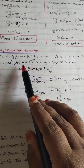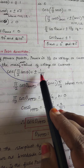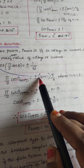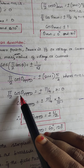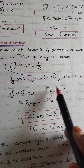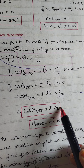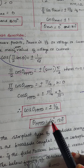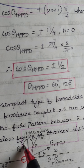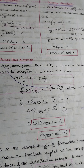For the half power point, the power is equal to half when E equals plus or minus 1 by root 2. Setting cos of pi by 2 cos theta equal to plus or minus 1 by root 2, we get pi by 2 cos theta equal to plus or minus pi by 4. Substituting n equal to 0, cos theta equals plus or minus 1 by 2, giving theta equal to cos inverse of plus or minus 1 by 2, which is 60 degrees and 120 degrees. So the half power point directions are 60 degrees and 120 degrees.